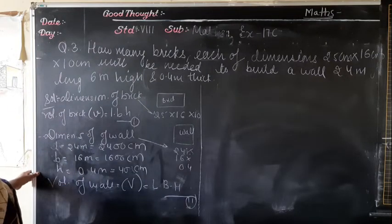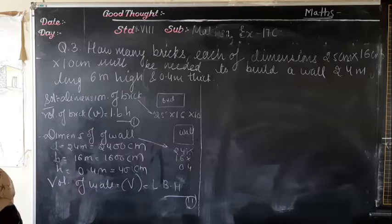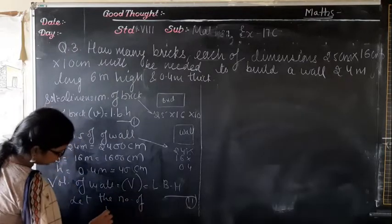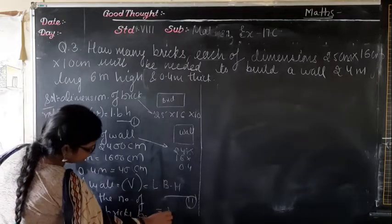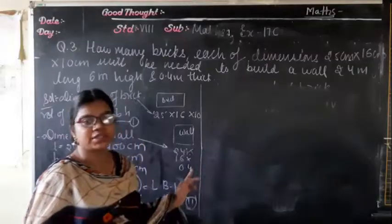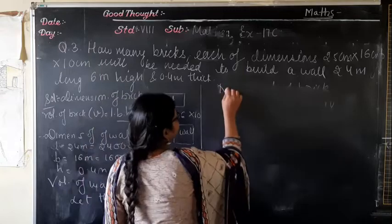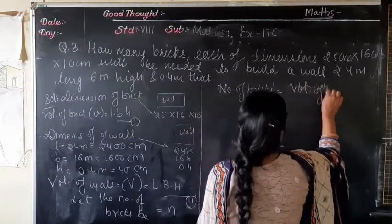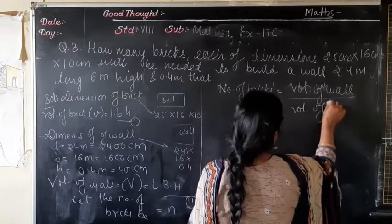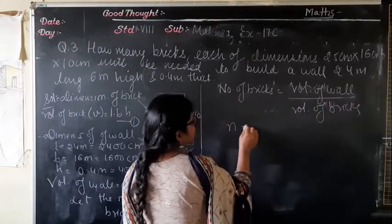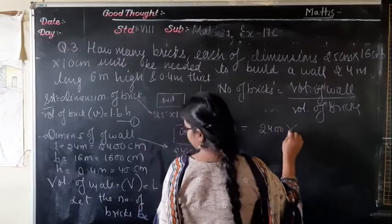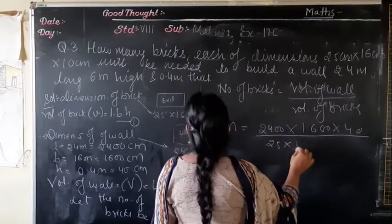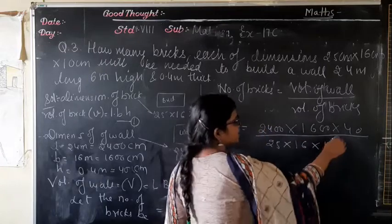We have to find the number of bricks. Let the number of bricks be n. Number of bricks = volume of wall ÷ volume of bricks = (2400 × 1600 × 40) ÷ (25 × 16 × 10).